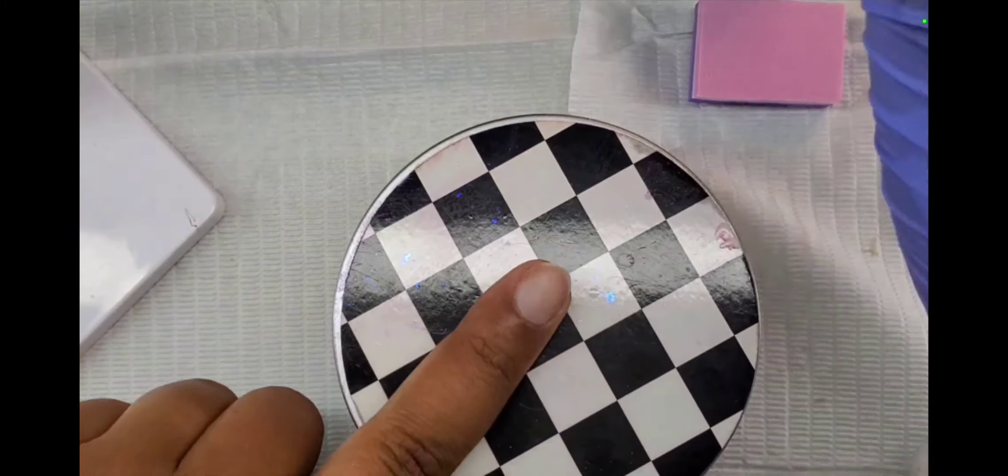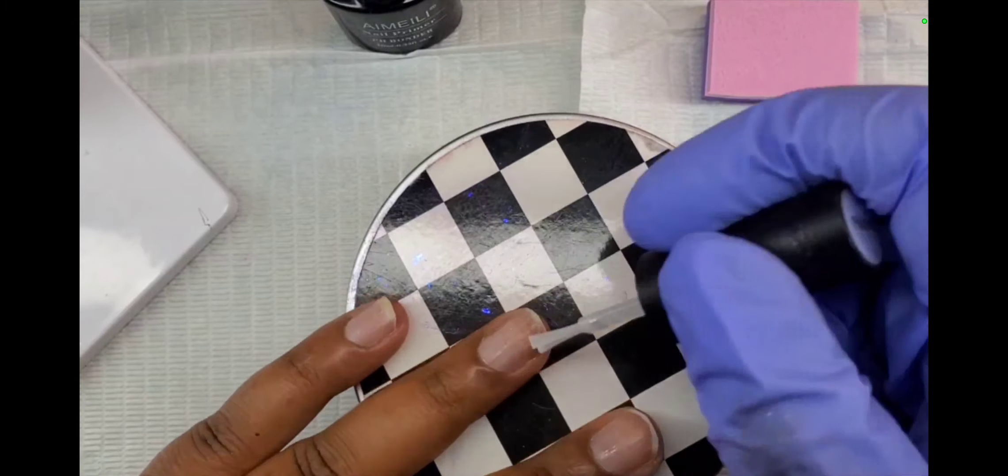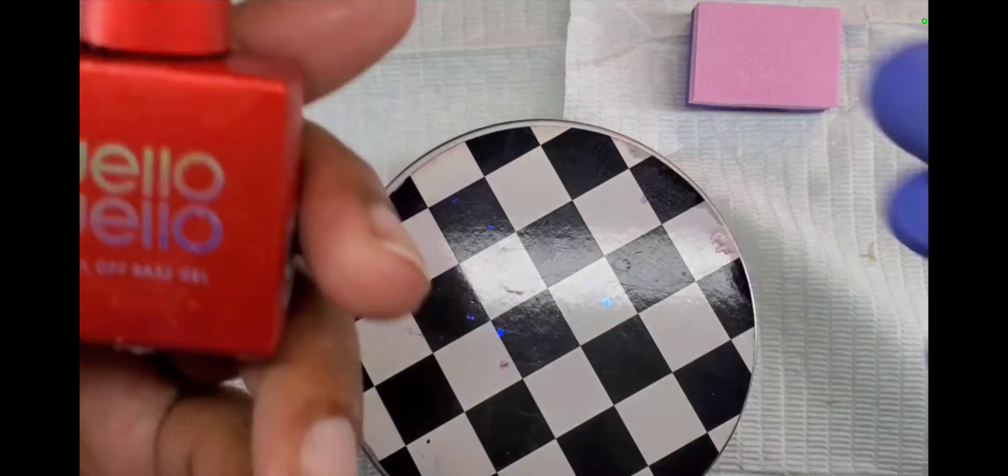Once I'm done with that I'm gonna go in with the dehydrator. I'm gonna put that on all the nails. And then once that's dry I'm gonna go in with the primer. And then once that's dry I'm gonna go in with the Jello peel off base coat. So I'm gonna put on the whole surface of the nail, just put a thin layer. And then I'm gonna cure that for a full 60 seconds in my nail lamp.